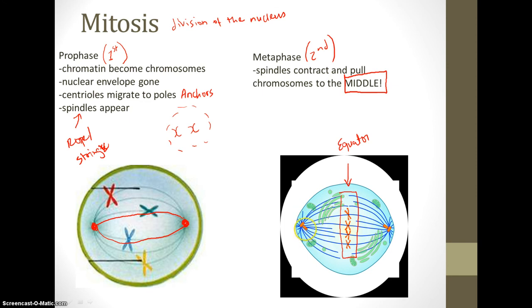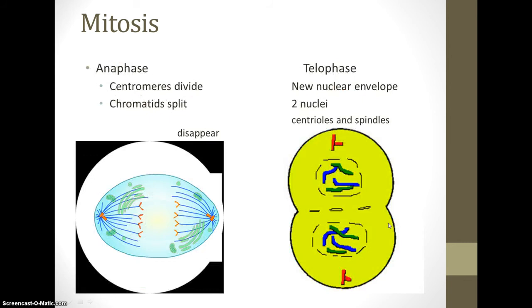The centrioles are still on the outsides, and the spindles are still connecting them and tugging and pulling. Then we have our third step: anaphase. In anaphase, what occurs is that centromeres divide. We have a chromosome with a middle.